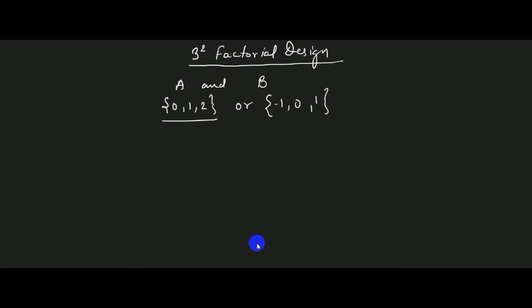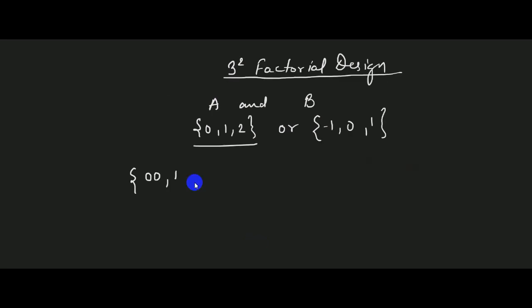Since A and B both are at three levels, this produces nine treatment combinations in which both factors could be at low level, or factor A could be at intermediate level and factor B at low level, or factor A at low level and B at intermediate level, both at intermediate level, and factor A at high level with factor B at intermediate level.